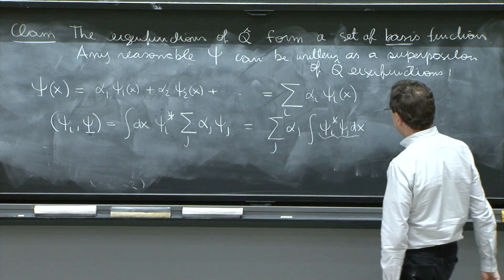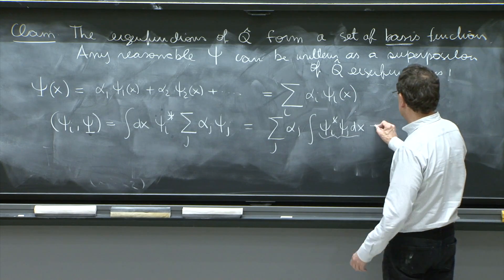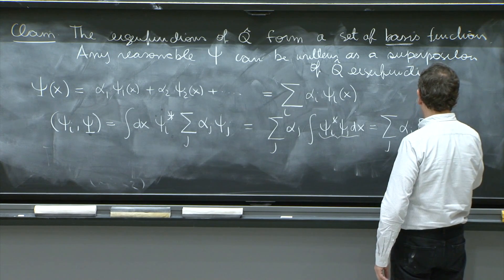And what is this? Delta ij. That is our nice orthonormality. So this is sum over j, alpha j, delta ij.